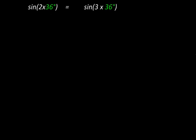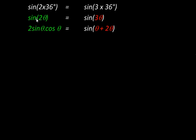Next, we take the left-hand side and expand it: sin 2θ equals 2 sin θ cos θ. On the right-hand side, I'm going to split 3θ into the sum θ plus 2θ, then expand the right-hand side as the sine of the sum of two angles.